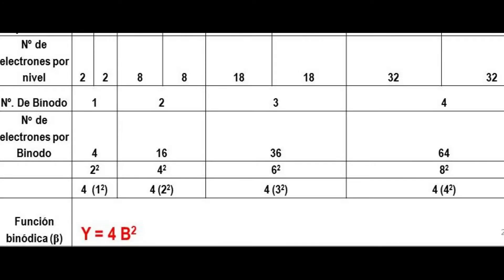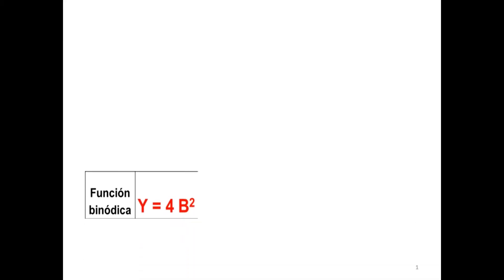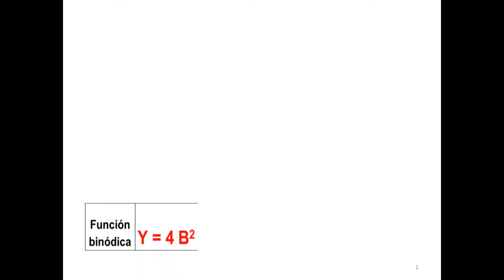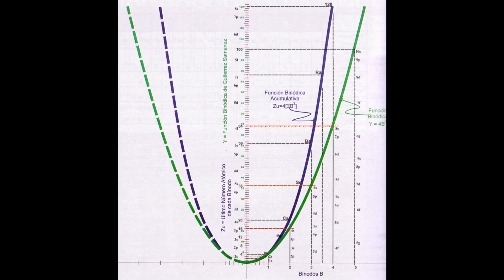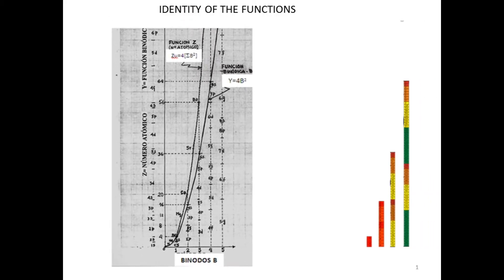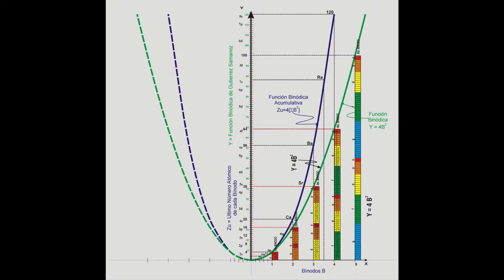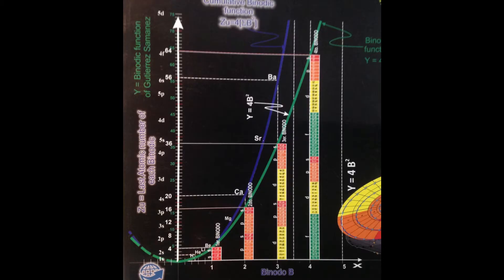These are summarized in the general mathematical function y equals b squared, or function y equal to four times the square of b. The size of the binodes is proportional to four times the squares of the binode numbers — that is a quadratic parabola — which, when compared with the binautical number function with periods horizontally aligned, shows to be identical.